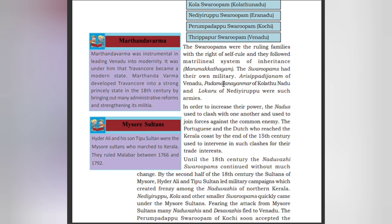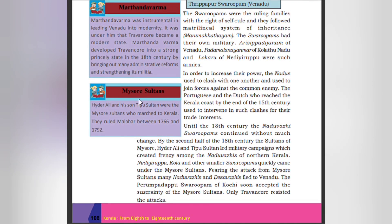The armies of Venad, Kolatthu Nadu, and Nadiripu were notable. In order to increase their power, the nadus used to clash with one another and also join forces against a common enemy. The Portuguese and the Arabs, who reached the Kerala coast by the end of the 15th century, used to intervene in such clashes for their trade interests. Until the 18th century, the Naduvali Surubhams continued without much change. By the second half of the 18th century, the sultans of Mysore — Hyder Ali and Tipu Sultan — led many military campaigns which created unrest among the Naduvalis of northern Kerala. Nadiripu, Kola, and smaller surubhams quickly came under the Mysore sultans.